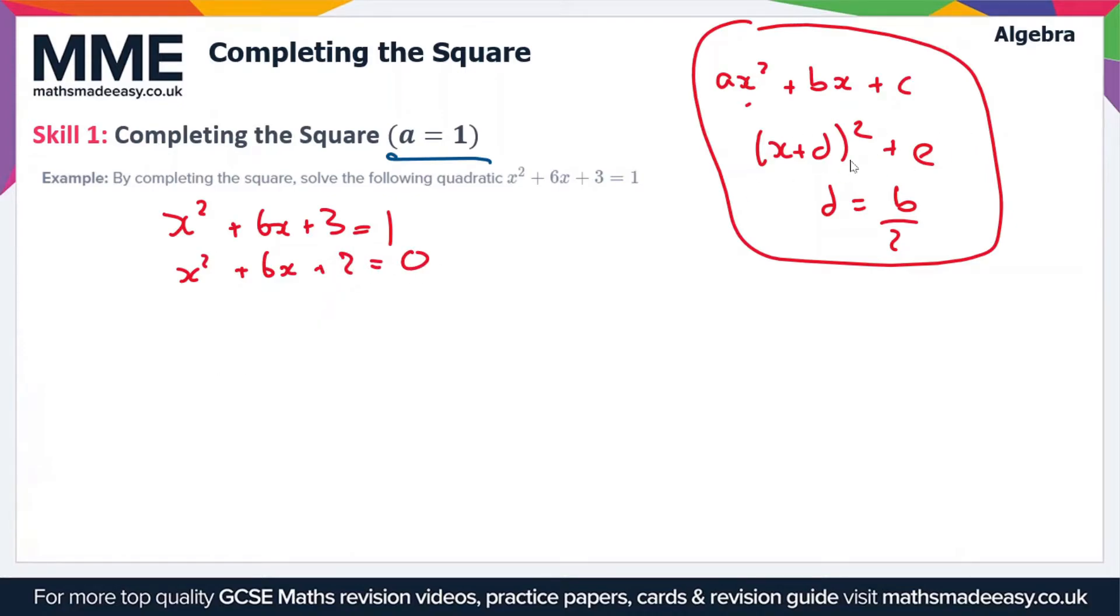Now we can put this in the form (x + d)² + e. Our brackets are going to be (x + 3)² because we use b over 2 as the number in the brackets, and b here is 6, so we get (x + 3)².